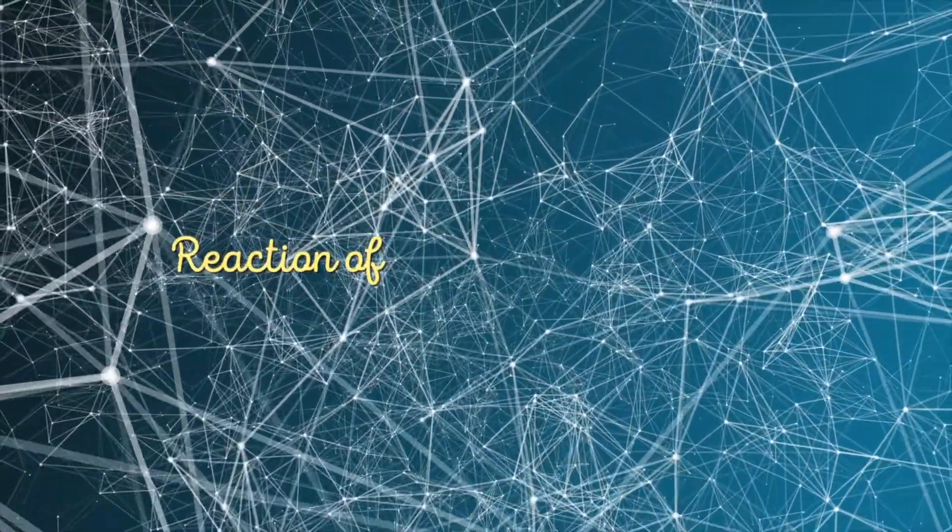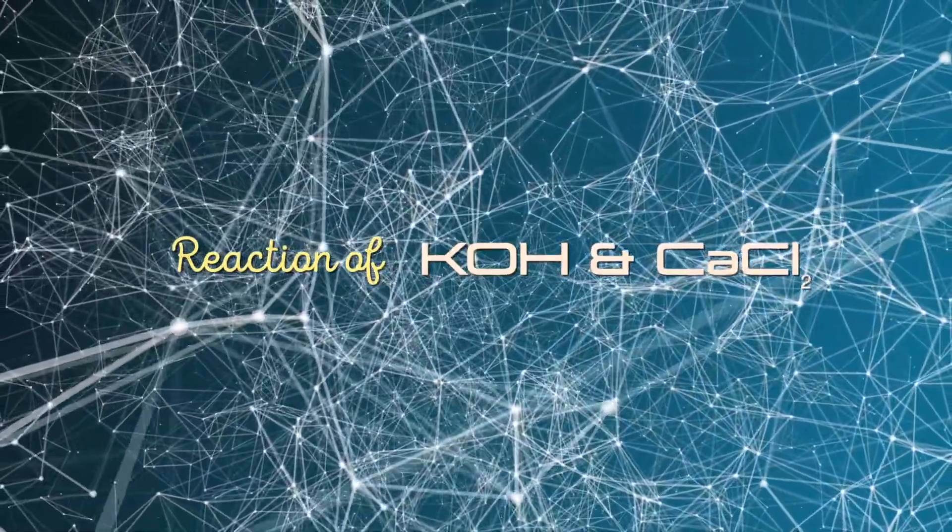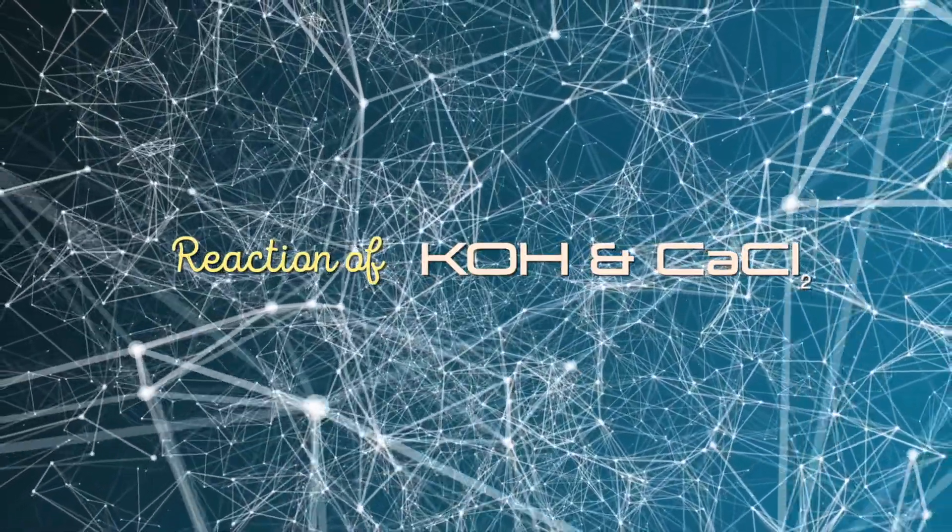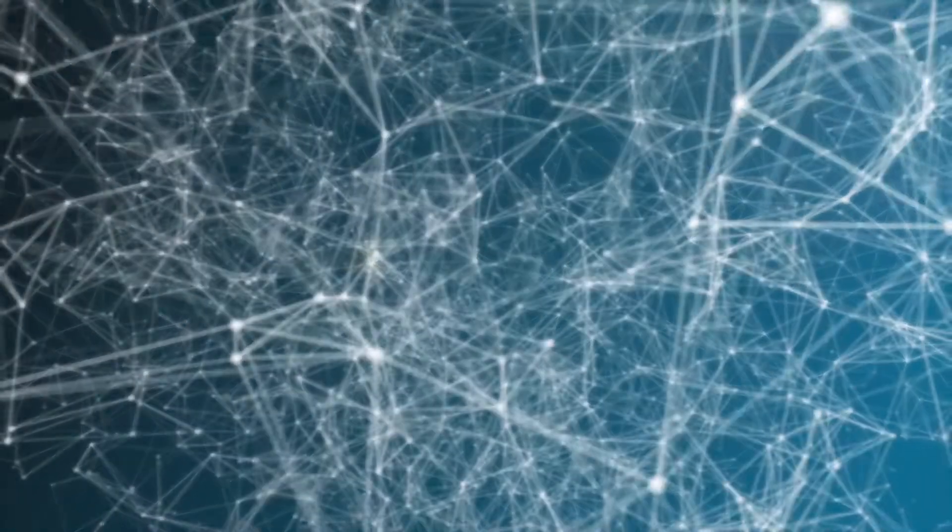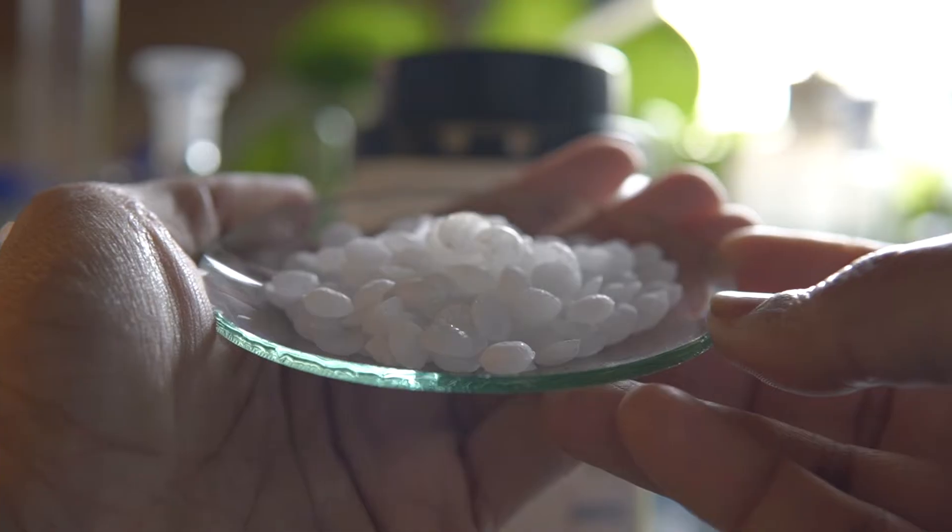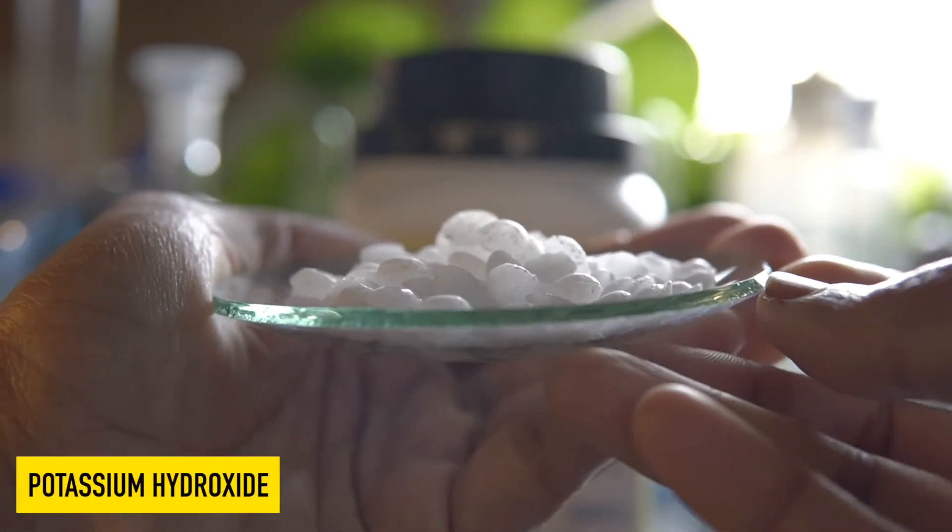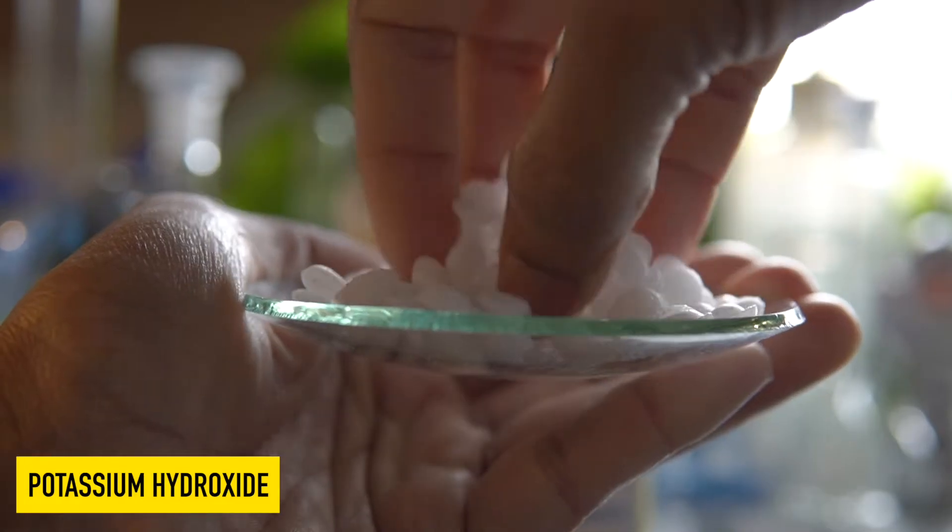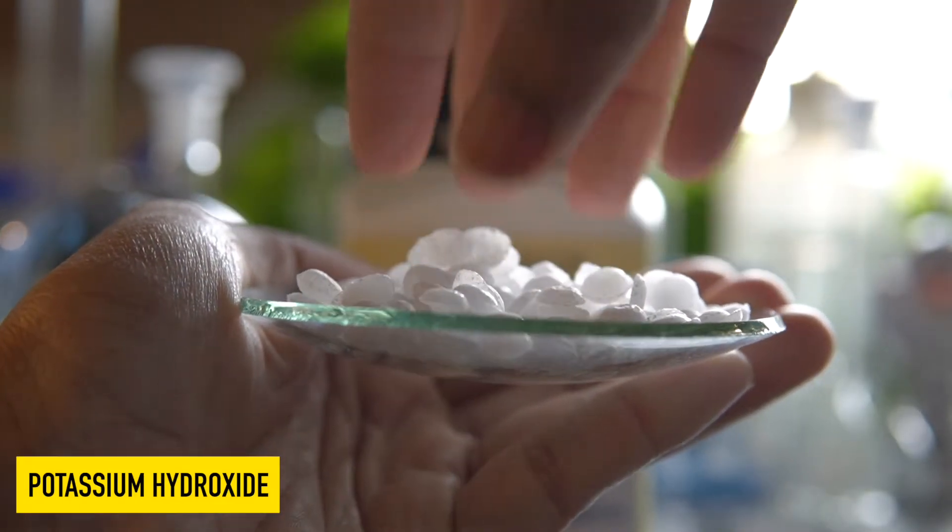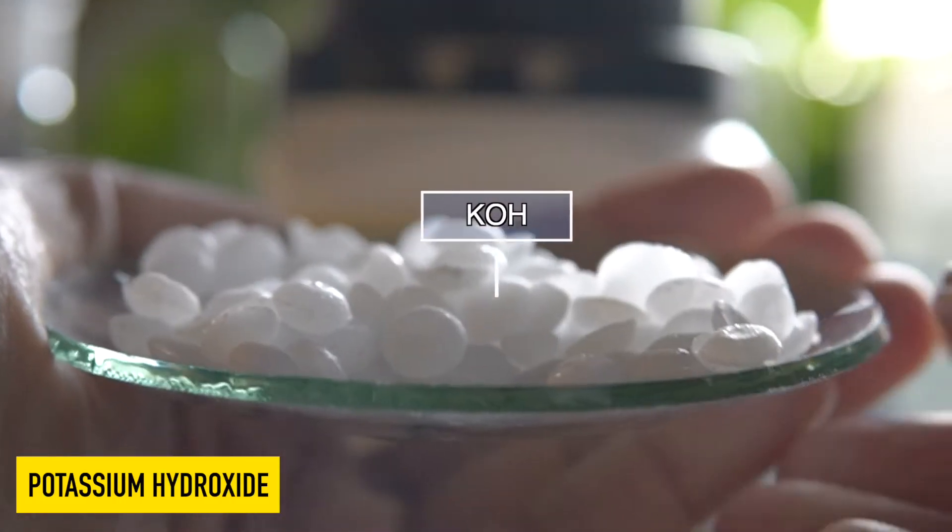Today we're going to observe the chemical reaction between caustic potash or potassium hydroxide and calcium chloride. These are KOH pellets - they are hygroscopic in nature and can easily dissolve in water to make KOH solution.